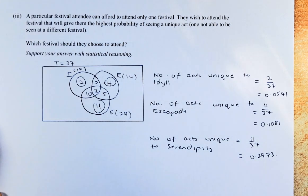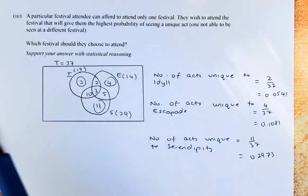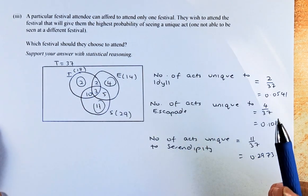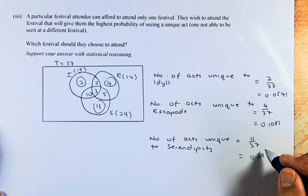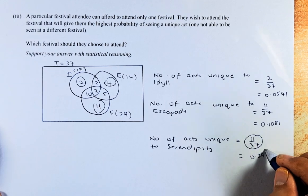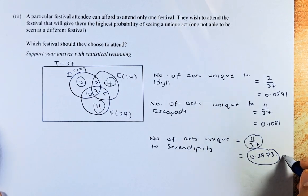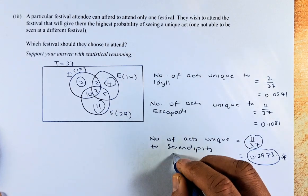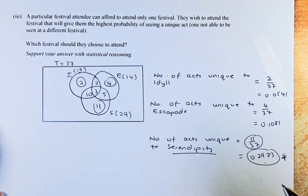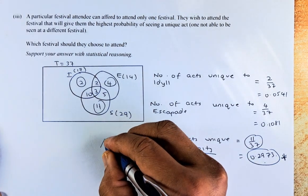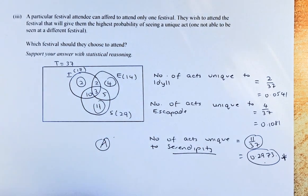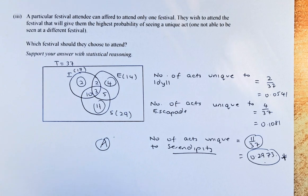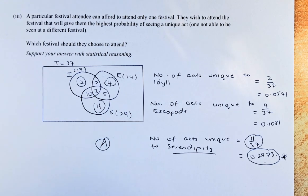So the question asks you, which one should they choose to attend? They should attend Serendipity because the unique act is the highest. It is 0.2973. If you can answer Serendipity because it is the biggest number, the biggest probability, then that will be an achieve. Go through the question again. Part 1, that's achieved. Part 2 is merit. Part 3 is achieved. You can get that, you get merit for this paper. Cheers, everyone, and have a good day.